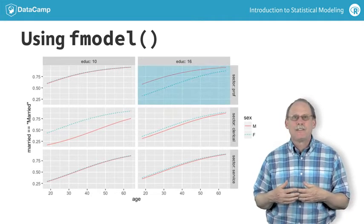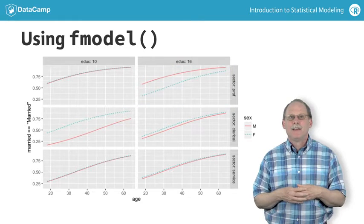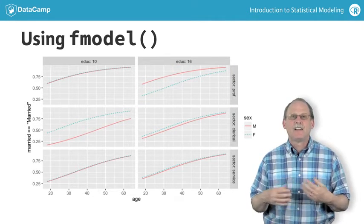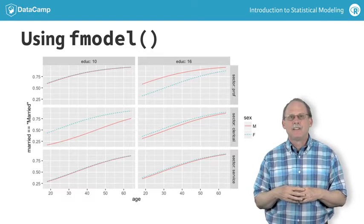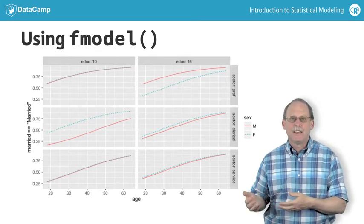Females with more education are less likely than males to be married in the professional sector. Each of these subgraphs is created by setting the education and sector variables to the level indicated in the margin. Then the model is evaluated for each sex at each of many ages.